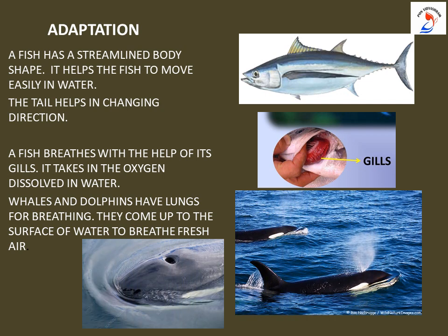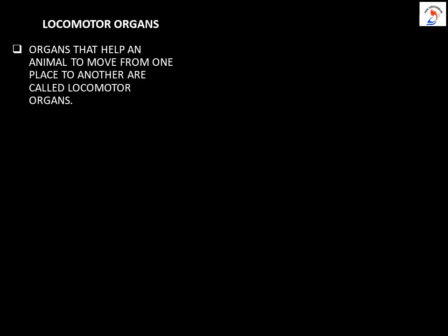Whales and dolphins have lungs for breathing. They have blow holes located near the top of the head, which helps them inhale air from the surface above the water. Now let us talk about the locomotor organs in aquatic animals. Organs that help an animal to move from one place to another are called locomotor organs.